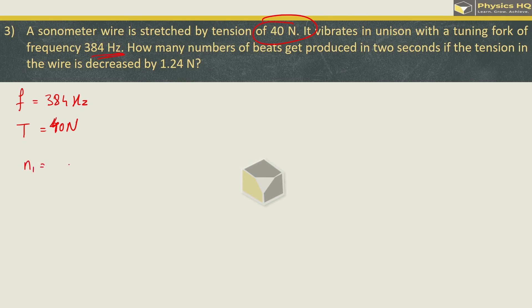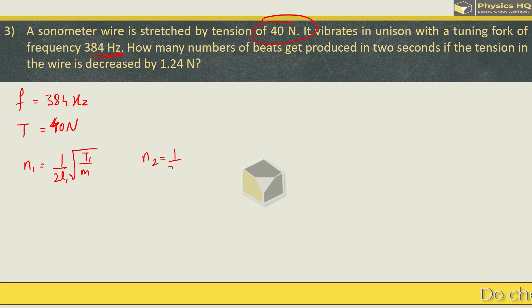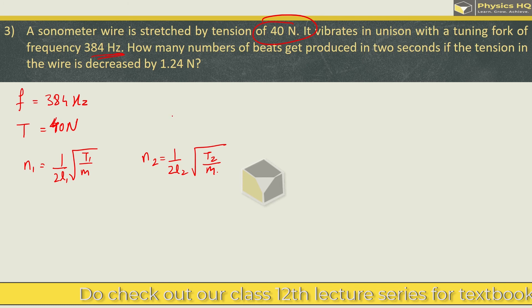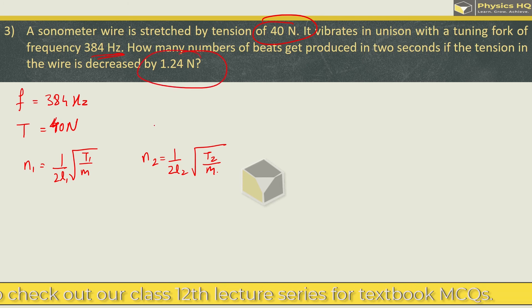We have a formula: n1 is equal to 1 upon 2L root of T by m. Here we have m means mass per unit length. Wire will be the same in both cases. In the second case, n2 is equal to 1 upon 2L root of T2 by m. What has changed? Tension.